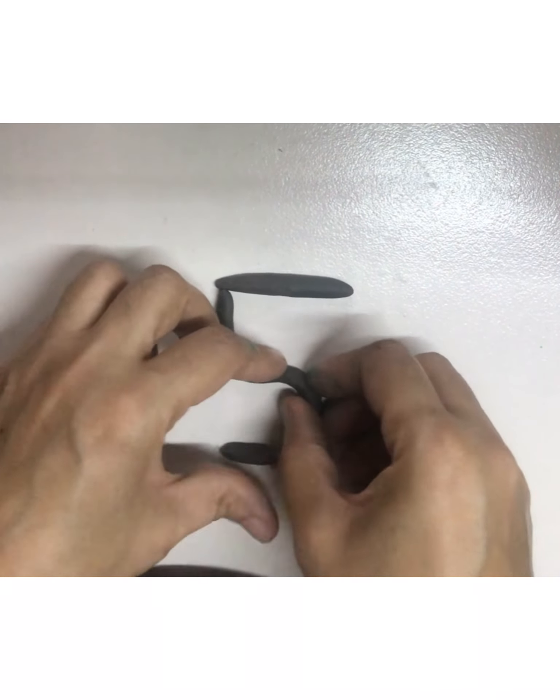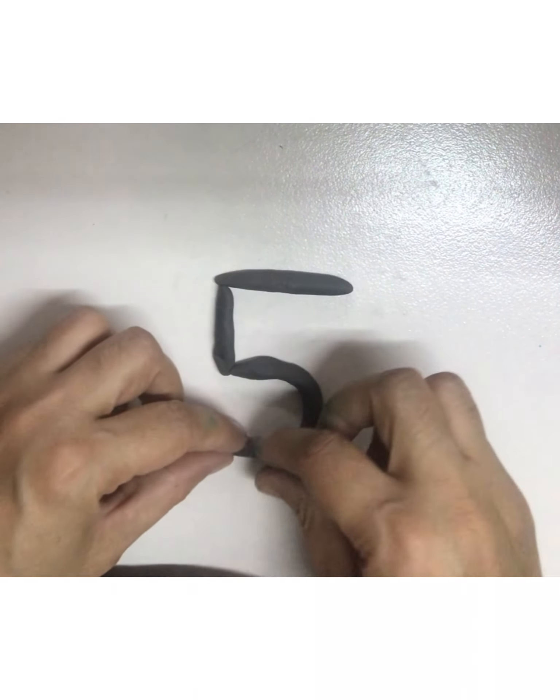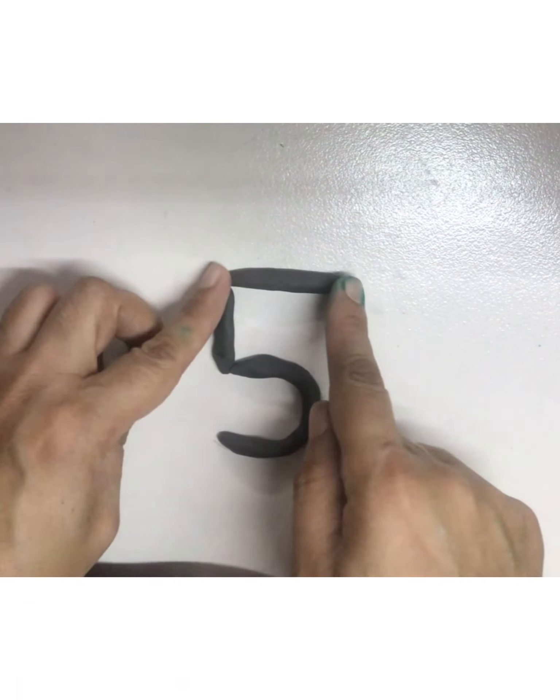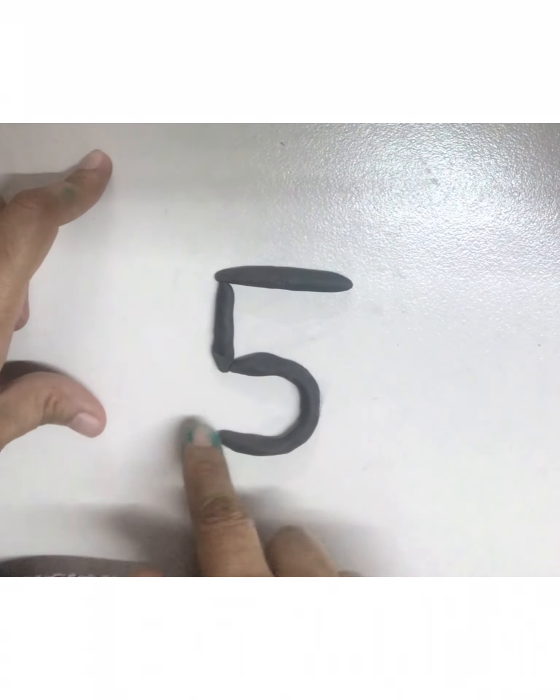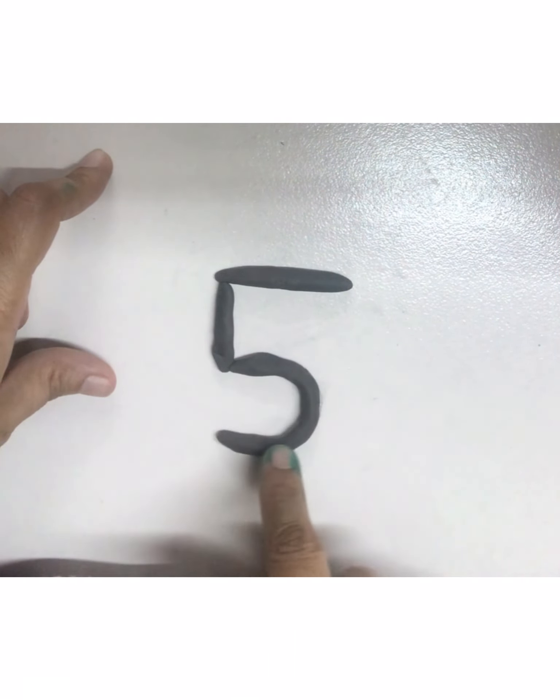So kids, it's so simple to make number five with clay. How we did it? Sleeping line, standing line and curve.